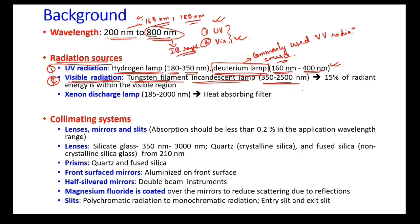There is a large portion of infrared radiations being generated by the tungsten filament incandescent lamp. Only 15% of the radiant energy of the total radiation generated by this tungsten filament lamp falls within the visible region. We can use only this 15% which is in the visible portion; all other radiation is mostly in the IR range.